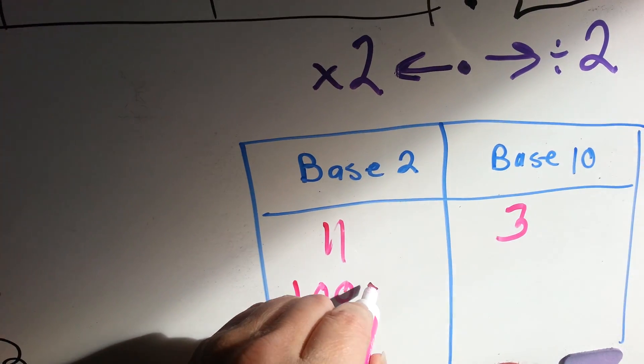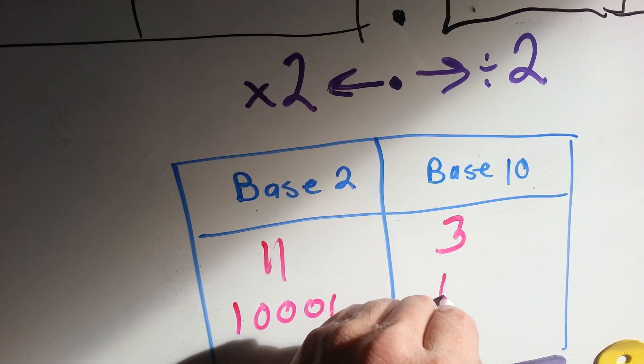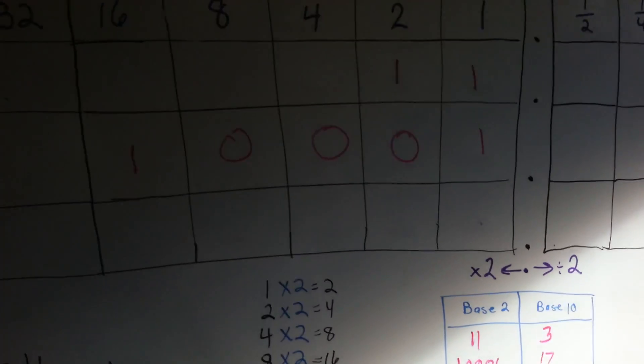1, 0, 0, 0, 1 is 17 in base 10. See that?